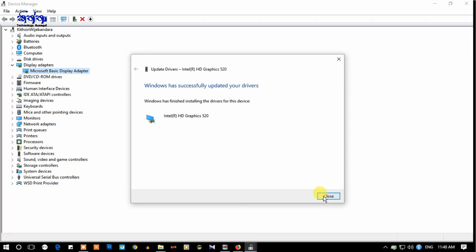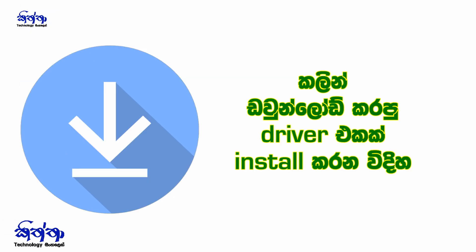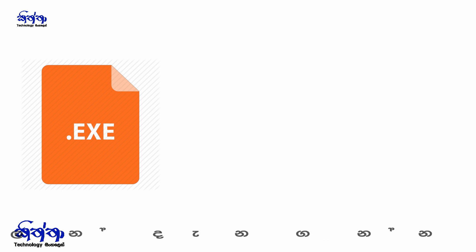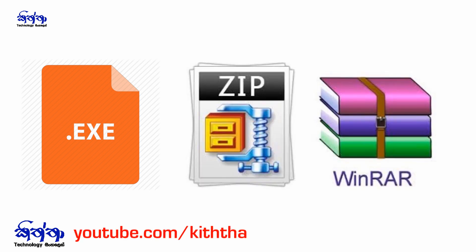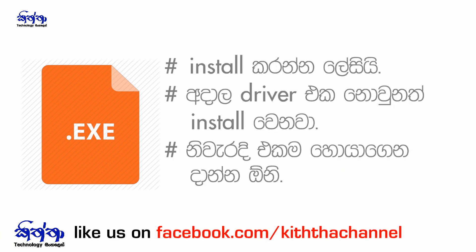You can check this device and get the device installed. Now I need to download the device driver and install it. You can install the driver for the device. After you download the device, if you have to check for an exe file, then you can download it and install it.